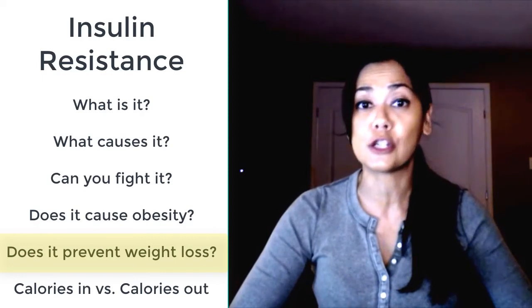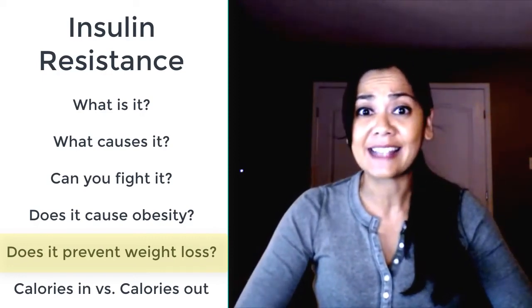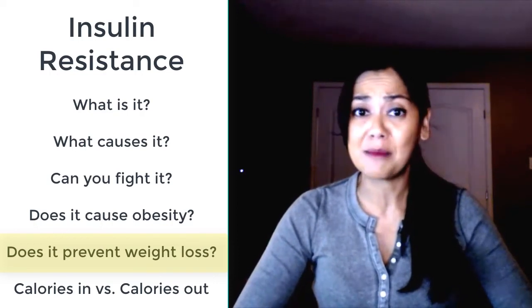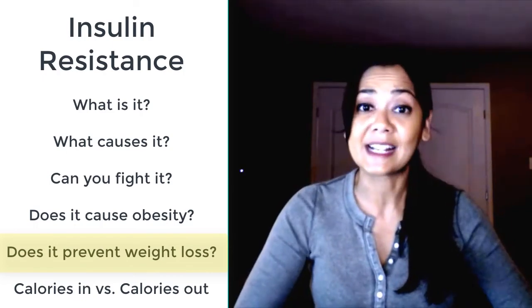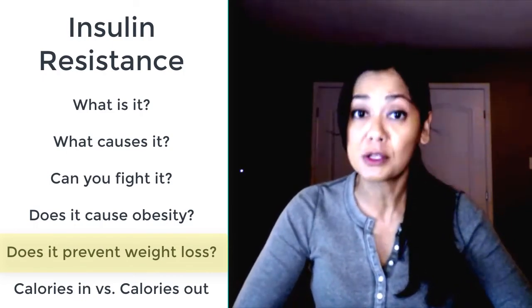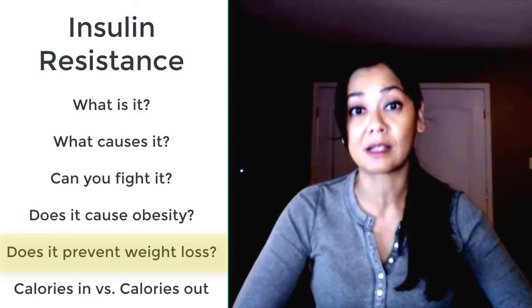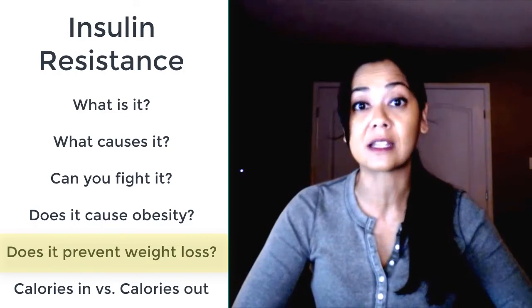And also if you eat less frequently there will be less glucose released into your bloodstream throughout the day. By no means when I say eat less frequently do I mean starve yourself. I'm just saying take three meals a day and get your calories three times rather than in six small meals throughout the day. In fact, intermittent fasting could also be a good approach for someone who is insulin resistant, just to cut down on the number of times that glucose is released into the bloodstream.